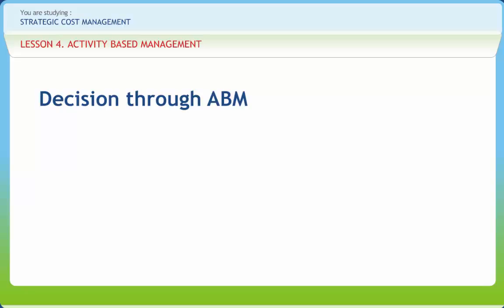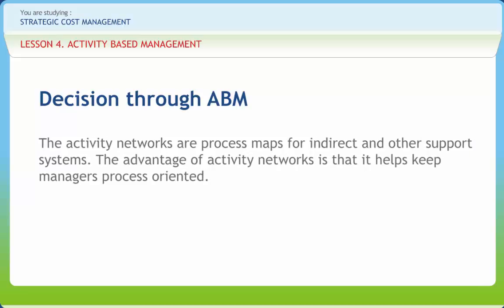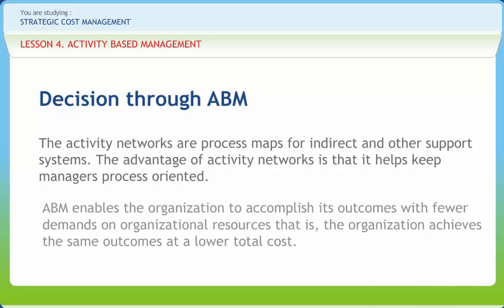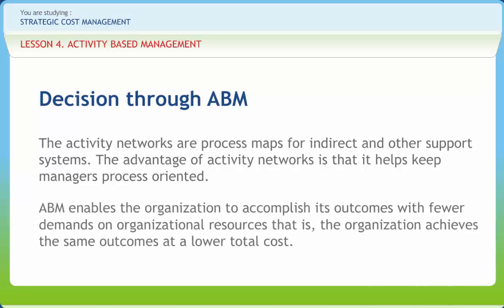Activity Networks are used to determine the commitment of resources on non-productive processes of the organization. The Activity Networks are process maps for indirect and other support systems. The advantage of Activity Networks is that it helps keep managers process oriented. ABM enables the organization to accomplish its outcomes with fewer demands on organizational resources — that is, the organization achieves the same outcomes at a lower total cost.